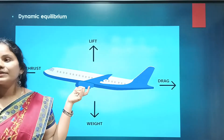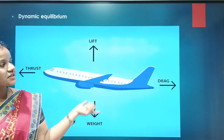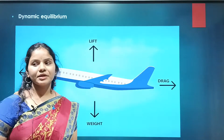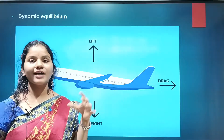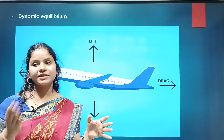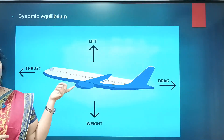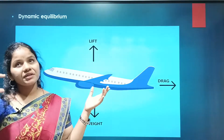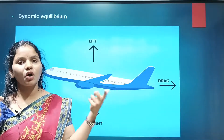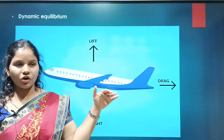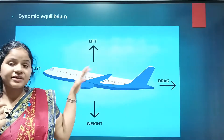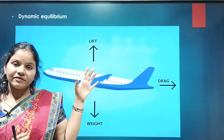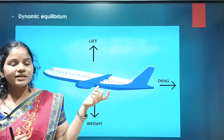Dynamic equilibrium — consider the example of an aeroplane. The aeroplane is moving while flying at a certain speed and certain height in a constant manner. The speed remains constant even though several forces are acting on it. When several forces are acting on an object and it is not changing its state of motion, that is dynamic equilibrium.